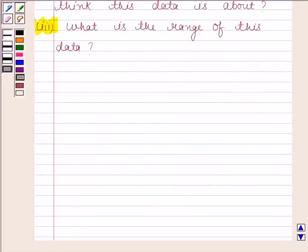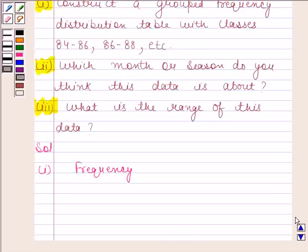Let us now begin with the solution. In the first part we have to construct a grouped frequency distribution table with classes 84 to 86, 86 to 88, etc.